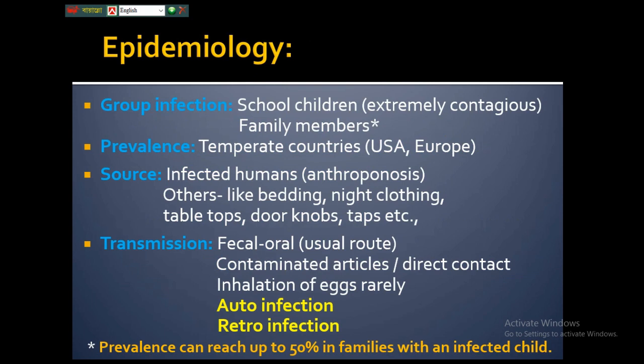Epidemiologically, this infection is more common in groups of people living together, such as school children and family members, due to its extreme contagiosity. Prevalence is highest in temperate climates such as the USA and Europe. The source of infection is the infected human — this is an anthroponosis, not zoonotic. Other sources include bedding, night clothing, and household fomites. The most important transmission routes are fecal-oral, auto-infection, retro-infection, and inhalation.